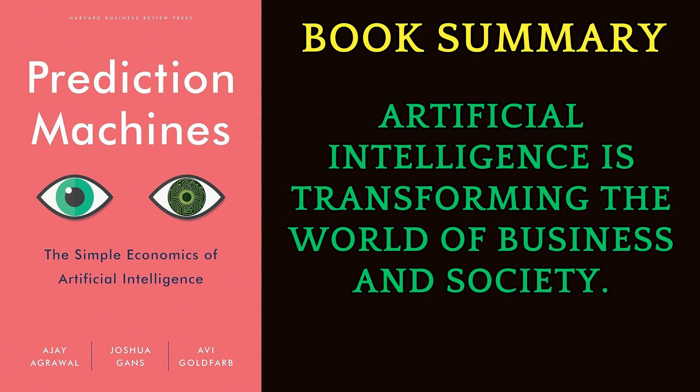Evidence of this can be drawn from diverse fields: experts in medicine or law have been found to make inconsistent judgments compared to algorithmic decisions. A well-documented case of this human-machine contrast is the narrative from Moneyball, where the gut feelings of seasoned baseball scouts were frequently outstripped by data-driven assessments of players.